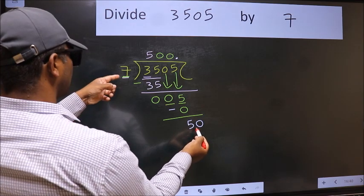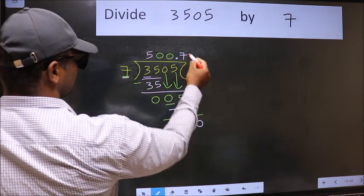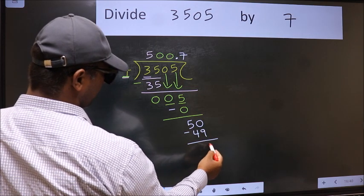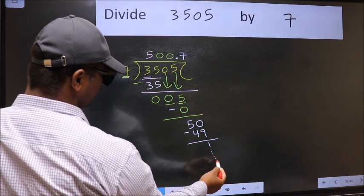A number close to 50 in 7 table is 7 sevens 49. Now we should subtract. We get 1. And you continue the division.